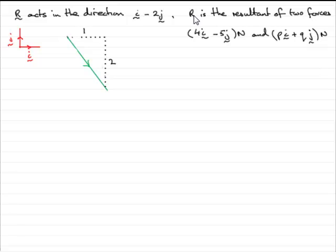The resultant vector is going to be the sum of the two forces here. So that's where we start. I'm going to write down that R is equal to this vector, 4i minus 5j, added to the other vector, pi plus qj.